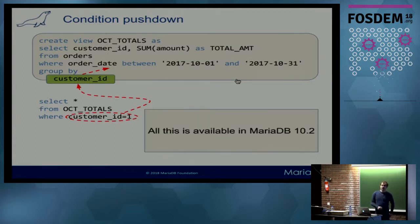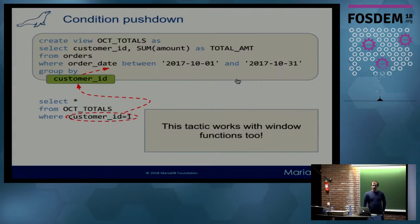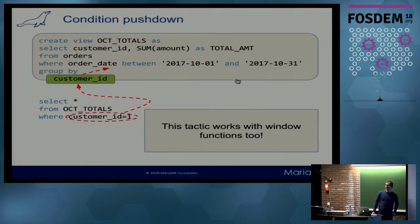This condition pushdown optimization is available in MariaDB 10.2. This tactic also works for window functions — window functions are available in MariaDB 10.2 and are also coming in MySQL 8.0.